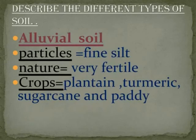Alluvial soil — Particles: fine. Water retention: very porous. Crops: Fountain millet, Sugarcane and Paddy.